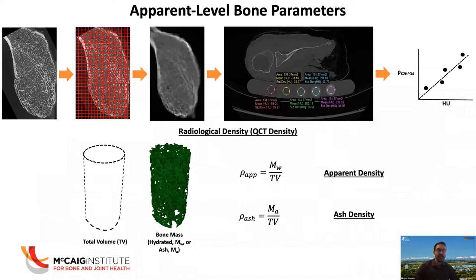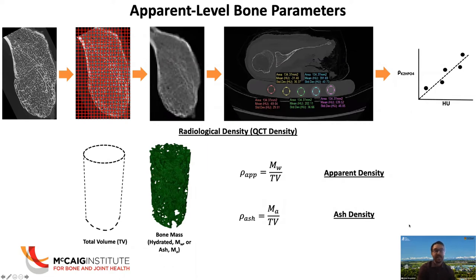Looking at apparent level bone parameters, a workflow starts with that high resolution image, and then a down-sampled image represents what our clinical image looks like. If we use QCT imaging, we have a relationship that gives us a radiological density, often called a QCT density. More historically, apparent density or ash density is used: apparent density uses the hydrated bone mass and total volume, while ash density burns the bone sample in a furnace to measure ash mass. All of these parameters can be related, and multiple studies in the literature relate radiological density, apparent density, and ash density.